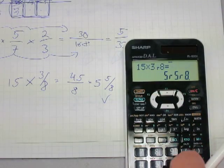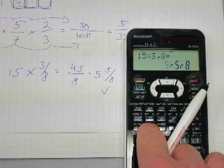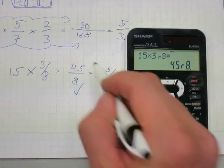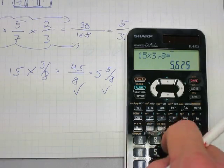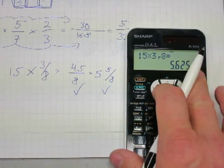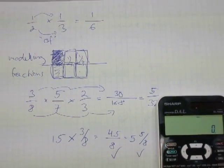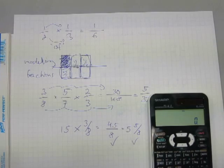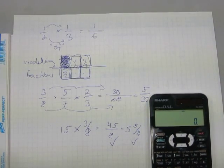On the calculator: 15 times three over eight equals five and five-eighths. Let's make an improper fraction with the second function and ABC button: 45 over eight. And as a decimal conversion, there it is. That's basically how to multiply a fraction by a fraction and a fraction by a whole number. Practice it until you reach a level of proficiency.